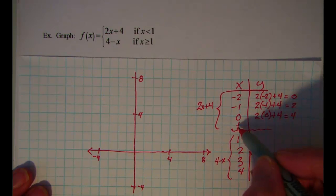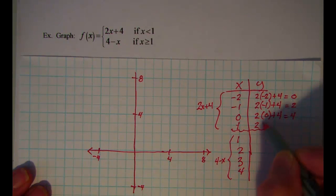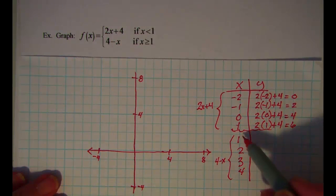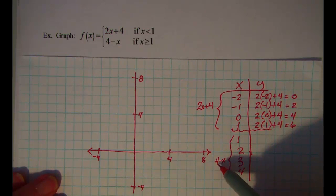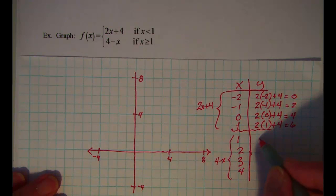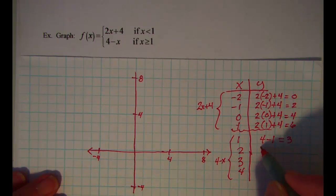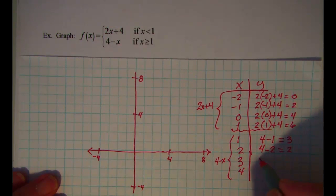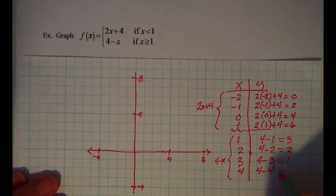For x equals 0, I have 2 times 0 plus 4, which is 4. And for x equals 1, I have 2 times 1 plus 4 equals 6. For these numbers I'm going to use the bottom rule, which is 4 minus x. So I have 4 subtract 1, which is 3. 4 subtract 2, which is 2. 4 subtract 3, which is 1. And 4 subtract 4, which is 0.